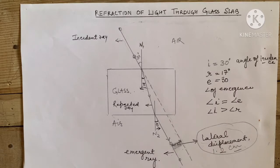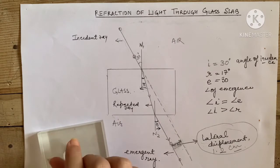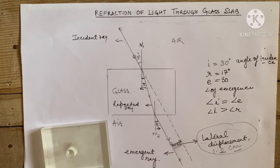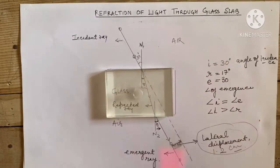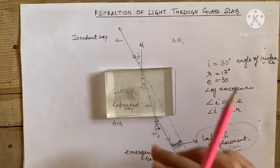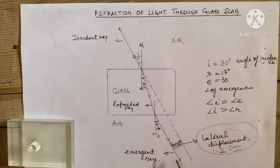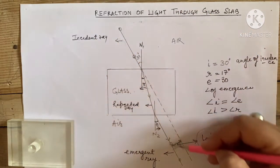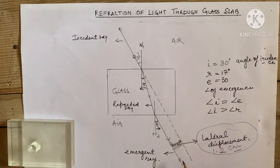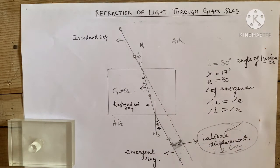Hello children, welcome again to this virtual lab where we have already learned how light gets refracted through a glass slab. We studied that for parallel refracting surfaces, as in the glass slab, the emergent ray is parallel to the incident ray, however it is slightly displaced — as we learned about the lateral displacement.